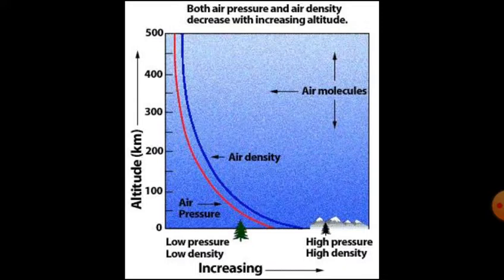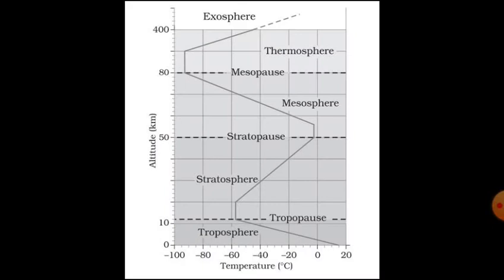The atmosphere is divided into five layers based on composition, temperature, and other properties. These layers, starting from the Earth's surface, are called the troposphere, the stratosphere, the mesosphere, the thermosphere, and the exosphere.